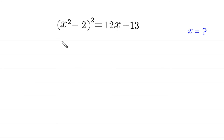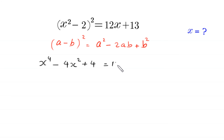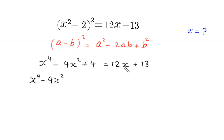We use the algebraic identity (a - b)² = a² - 2ab + b². Applying this, (x² - 2)² becomes x⁴ - 4x² + 4 = 12x + 13. Now we move the right-hand side terms to the left: x⁴ - 4x² - 12x + 4 minus 13.